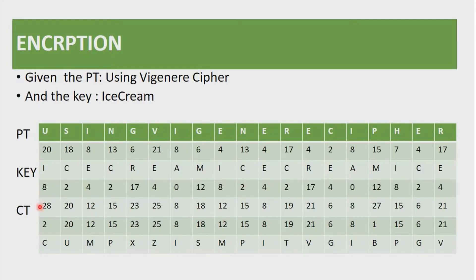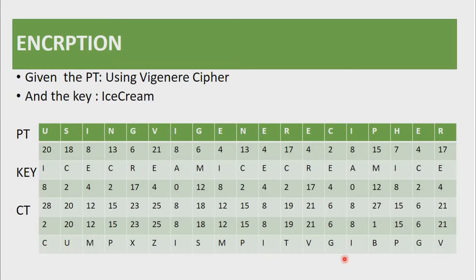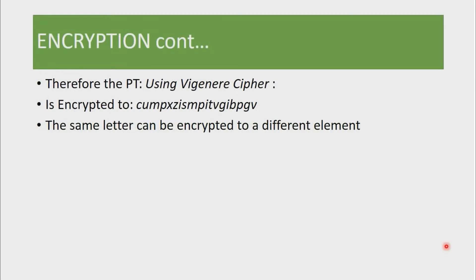What's left is to change this cipher text to mod 26. Mod 26 is simply the remainder after dividing by 26. So this row is us changing the cipher text to mod 26 — 28 becomes 2, and all elements lower than 26 remain the same; for example, 27 has been changed to 1. Lastly, we simply decode the cipher text back to letters using the same mod 26 encoding mechanism, and we arrive at the cipher text. Therefore, the message 'using Vigenère cipher' is encrypted to the resulting cipher text.